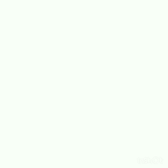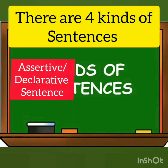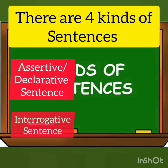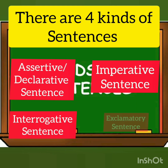Now, there are four kinds of sentences. First, assertive or declarative. Second, interrogative sentence. Third, imperative sentence. And fourth, exclamatory sentence.